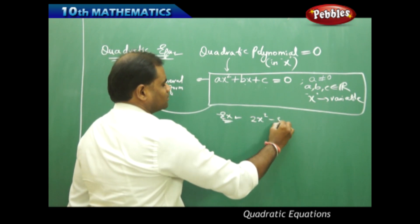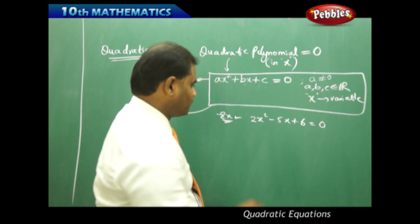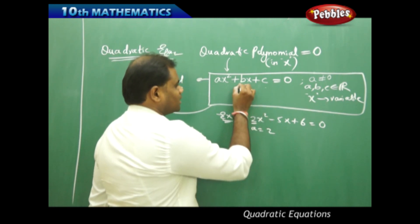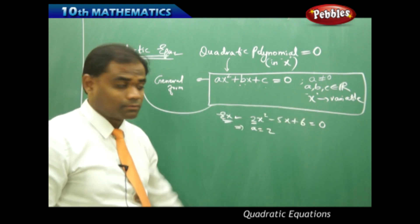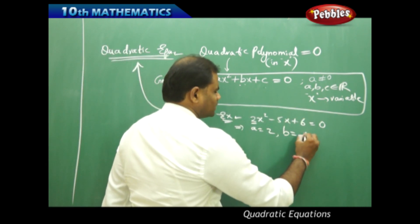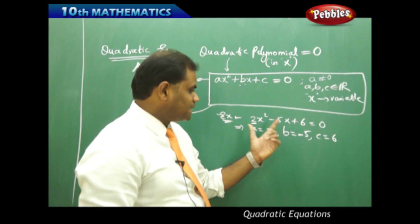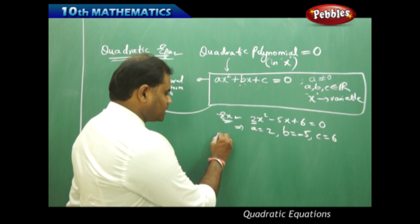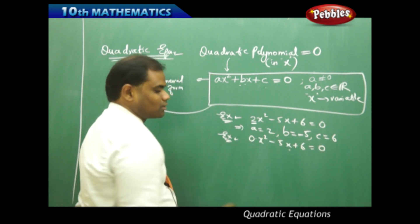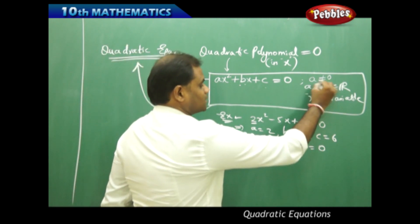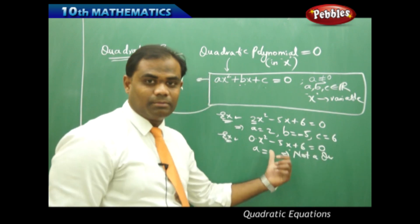For example, 2x squared minus 5x plus 6 equals 0 is a quadratic equation. Comparing with the standard form ax squared plus bx plus c equals 0, we identify a equals 2, b equals minus 5, and c equals 6. However, if a equals 0, as in 0x squared minus 5x plus 6, this fails the condition a not equal to zero, and therefore it is not a quadratic equation.